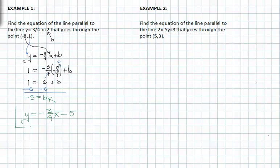And that's the equation of the line that is parallel to y equals negative three-fourths x plus two. The only difference is that the line crosses the y-axis lower than the original equation, but still parallel.